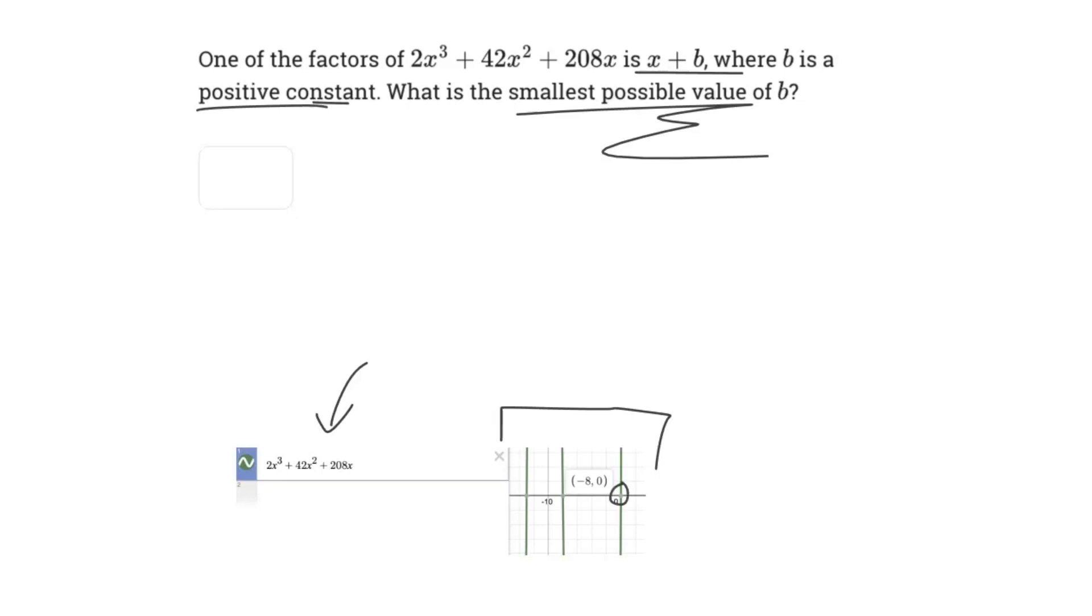And we have negative 8, 0, right? Negative 8, 0 is a solution. And therefore, when it is written in factored form as x plus b, that is the same thing as x plus 8, right?